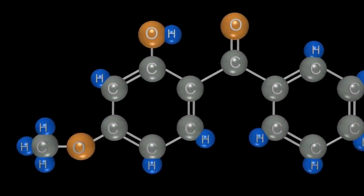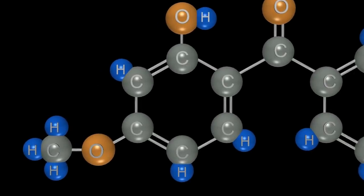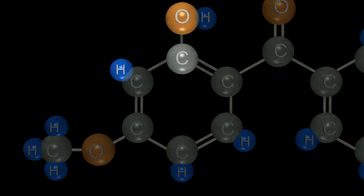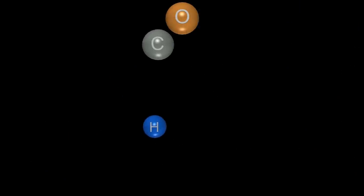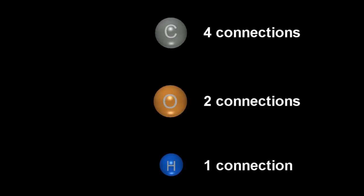In oxybenzone and the other UV-absorbing molecules, these conjugated double bonds are the key to their skin-protecting properties. In addition to the three conjugated double bonds of each of the benzene rings, an additional conjugated bond is seen on the connector between the rings. Remember that all of these molecules have to obey certain rules of chemical bonds — specifically, each carbon atom has to have four connections, oxygen two connections, and hydrogen one connection to other atoms in the molecule.